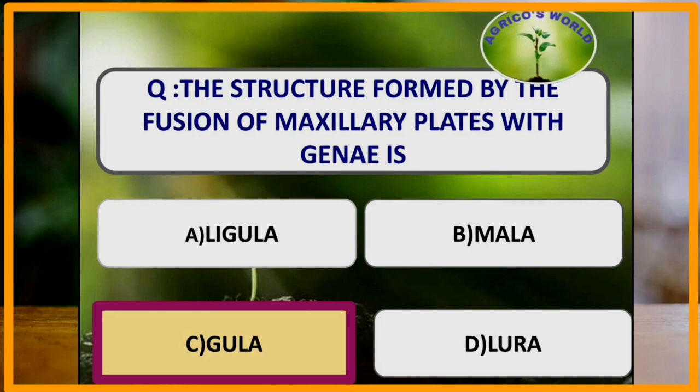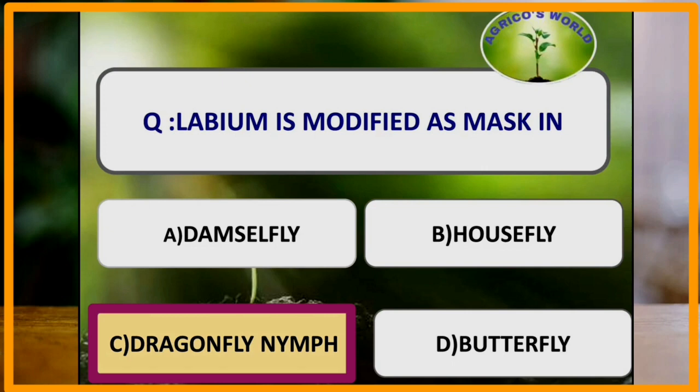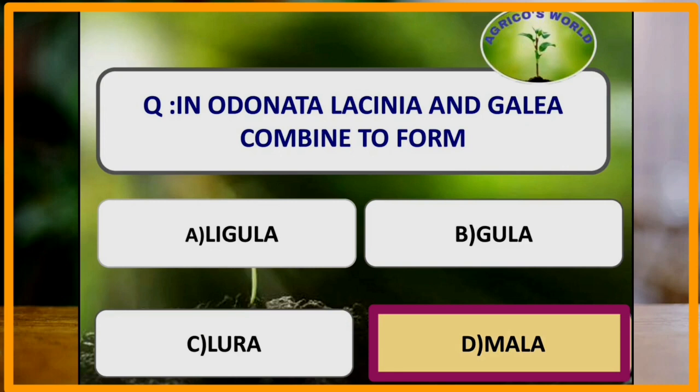Labium is modified as mask in which of the following? Labium is modified as mask in the nymph of dragonfly. In Lepidoptera, lacinia and galea combine to form the mala.